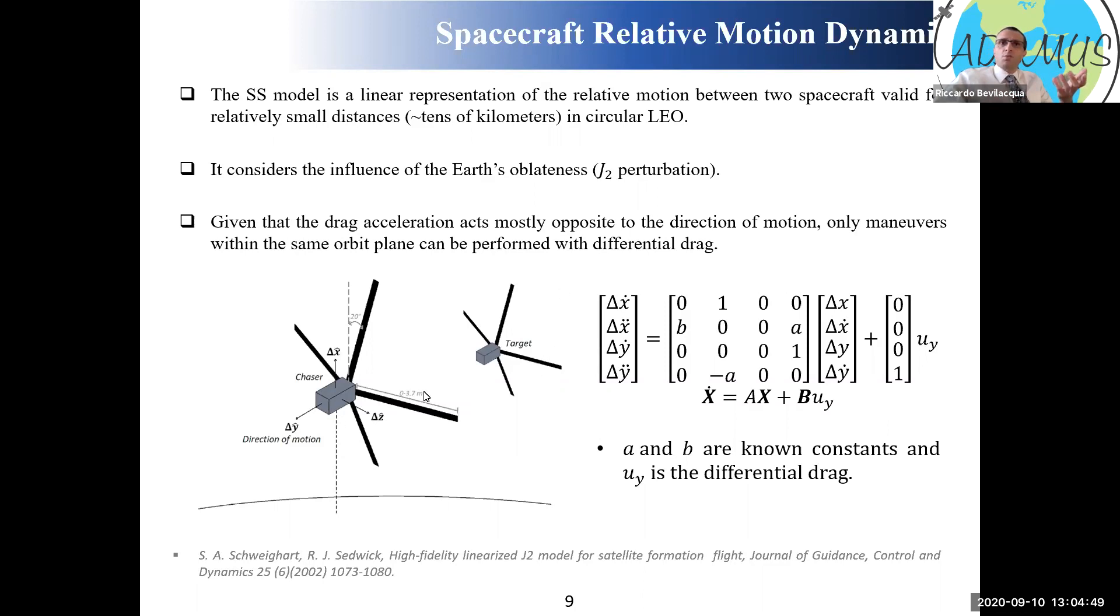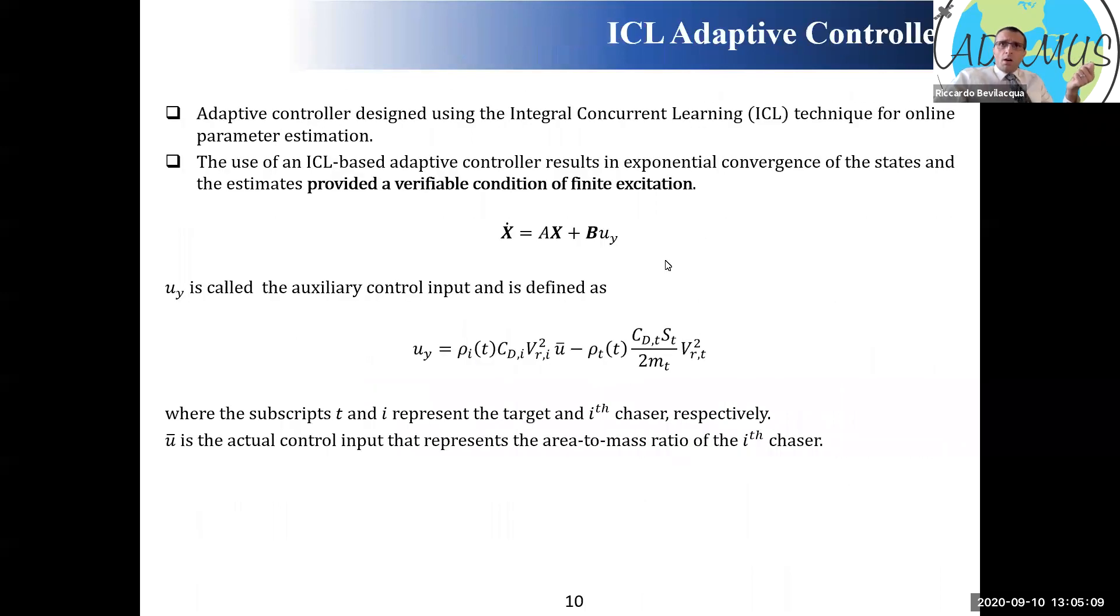The UI is my differential drag control force. If you imagine chaser and target, chaser has the deployable surfaces all retracted and target has them all deployed. The target is experiencing more drag and that will be reflected into a differential drag in the y direction for the most part. That's an assumption that's usually made.